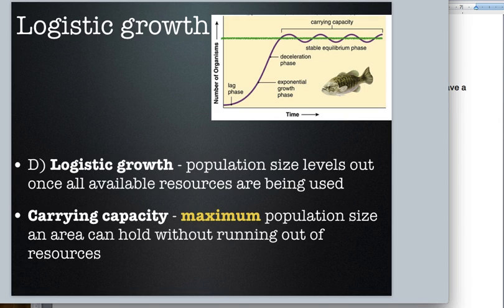Most population growth is called logistic growth. Notice you have an exponential growth phase, but then it reaches a point where it oscillates — goes above and below an imaginary line. That imaginary line is called carrying capacity. Capacity means maximum amount — so the carrying capacity is the maximum population size an area can hold without running out of food, water, shelter, and space, which are your limiting factors.